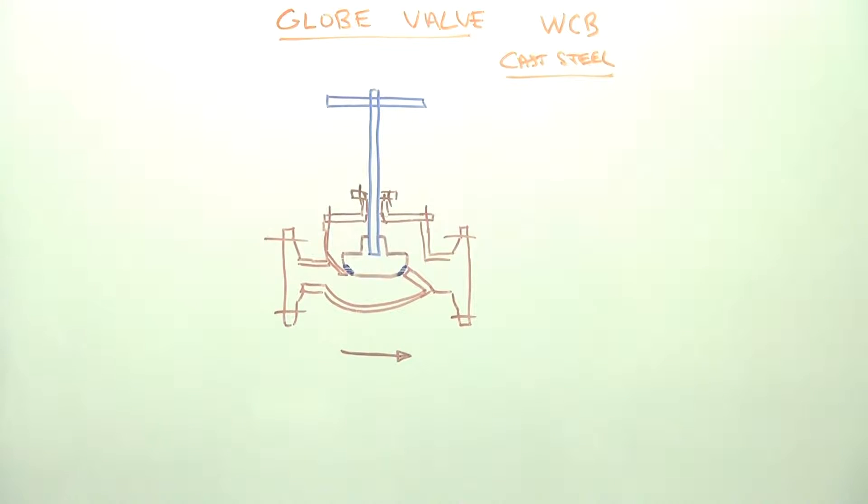Cast steel globe valves. Now these units are available in a number of different sizes from 50mm through to about 300mm or bigger.